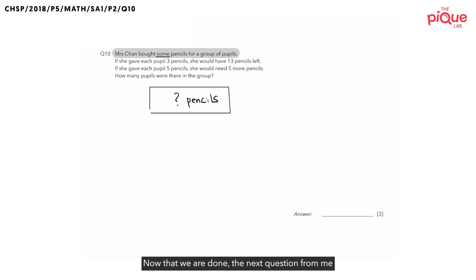Now that we are done, the next question is, do we know how many pupils are there in the group? The question did not state as well, potentially indicating this is what we need to help Mrs. Chan with finding. Let's help ourselves by letting one unit be the unknown number of pupils.